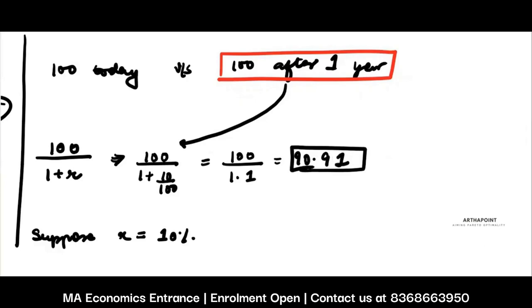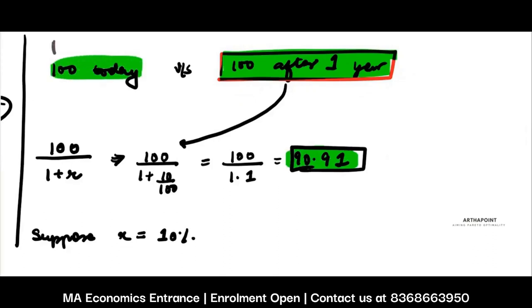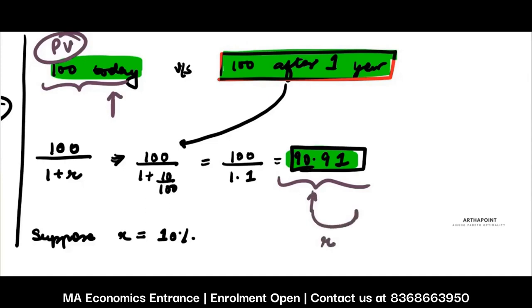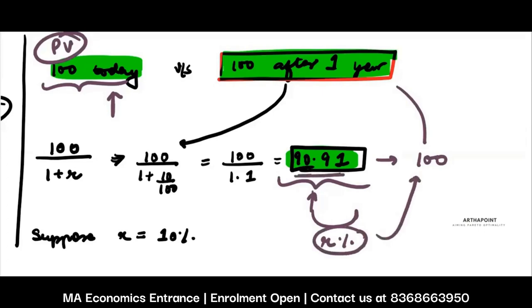We can approximate it to 90.91. So what I have done is bring this 100 after 1 year to its present value. 100 after 1 year means you are just getting 90.91 today, as compared to getting 100 today. So when I compare the present values — 100 today versus 90.91 today — definitely 100 today is a better option. Present value means whatever stream of payments you are going to get in the future, you find its value today — what is the amount today which, when invested at rate R%, will give you the future value. So when 90.91 is invested at 10%, it will give you 100 in the future.